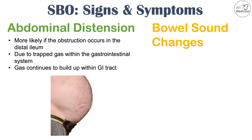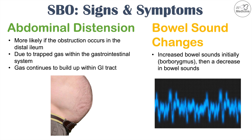There can also be bowel sound changes, and these often occur with a certain pattern. There can be increased bowel sounds initially, which we refer to as borborygmus or borborygmi, and then a decrease in bowel sounds as the occlusion completes or worsens. So initially there are more gurgling sounds from the abdomen, but eventually those bowel sounds slowly decrease and may not be heard at all.